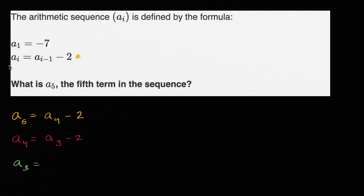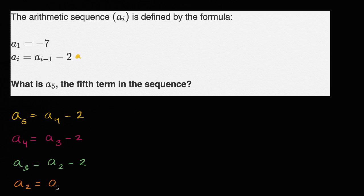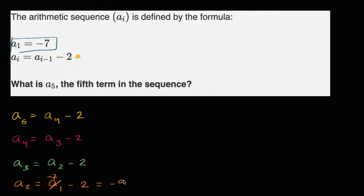A sub three is going to be equal to a sub two minus two. We still don't know what a sub two is, and so a sub two is equal to a sub one minus two. Now luckily we know what a sub one is — a sub one is negative seven. So if this is negative seven, then a sub two is negative seven minus two, which is equal to negative nine.